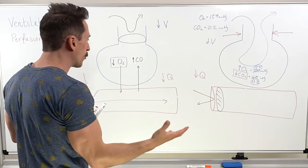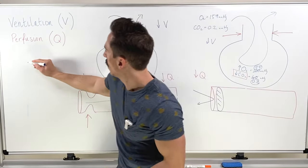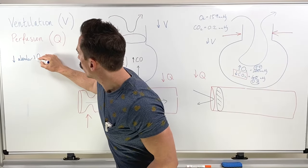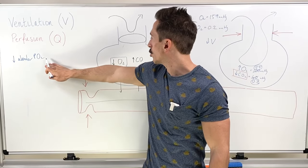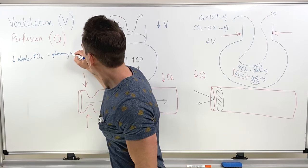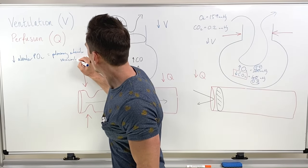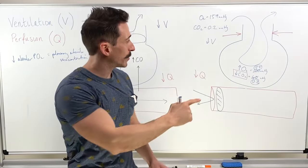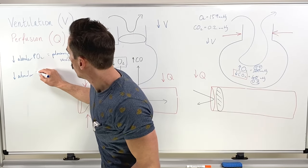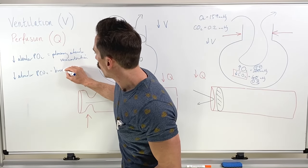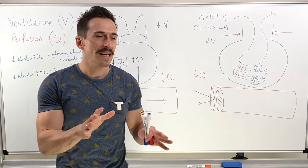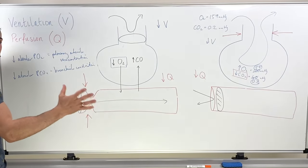How do you summarize all this? Decreased alveolar oxygen — or decreased alveolar partial pressure of oxygen — equals pulmonary arterial vasoconstriction. You could also say that decreased alveolar partial pressure of carbon dioxide equals bronchial constriction. This basically summarizes what's happening in the ventilation-perfusion coupling process.